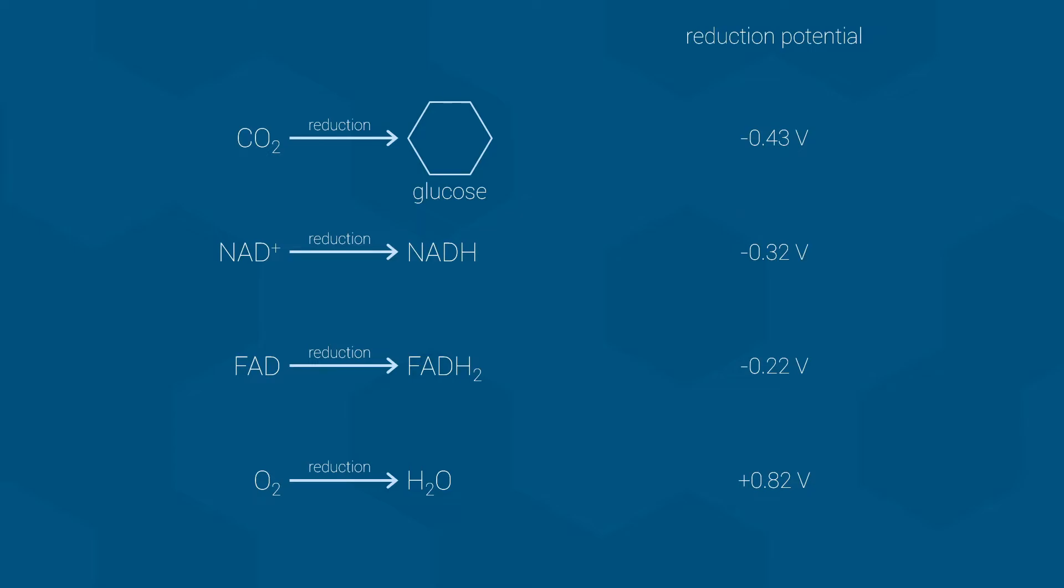Notice that both of these molecules have reduction potentials that are below glucose on the table. This means that electrons can be spontaneously transferred from glucose to the electron carriers. This type of redox reaction is one of the big functions of the first three phases of respiration: glycolysis, pyruvate processing, and the citric acid cycle. All of which we covered during Biology 112 lecture.